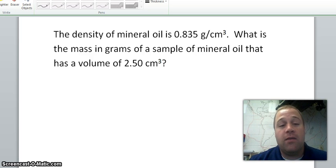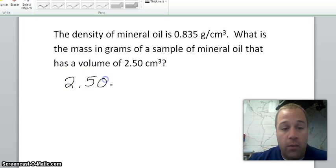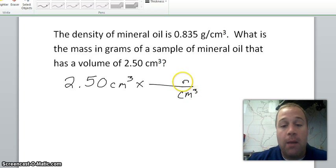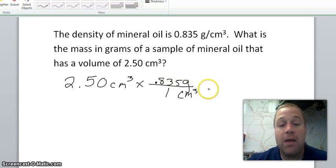Now we're asked what is the mass in grams of a sample of mineral oil that has a volume of 2.5 centimeters cubed. So I'm going to write 2.50 centimeters cubed times line. I need to get rid of centimeters cubed so it goes on the bottom. I put grams up top because that's what I want to go to. Our conversion factor again, 0.835 grams for every one centimeter cubed.